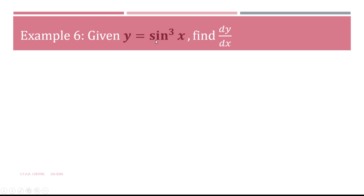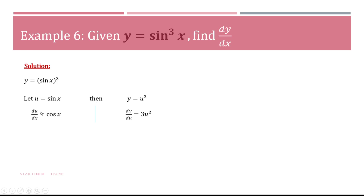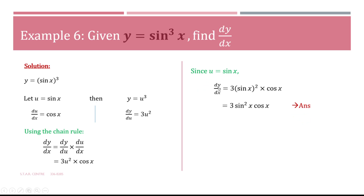Example 6: given y equals sine cubed x, find dy/dx. Sine cubed x is the same as (sine x) all cubed. Making the substitution: let u equal sine x, so y equals u to the power of 3. Differentiating: du/dx — the differential of sine x is cos x. dy/du — the differential of u³ gives 3u². Substituting into the chain rule: dy/dx equals 3u² times cos x. Re-substituting u equals sine x gives 3(sine x)² cos x, which is written as 3 sine² x cos x.